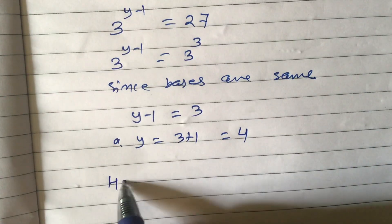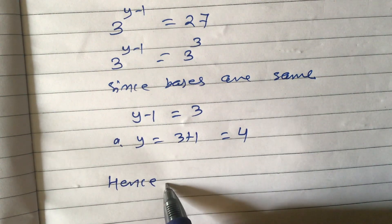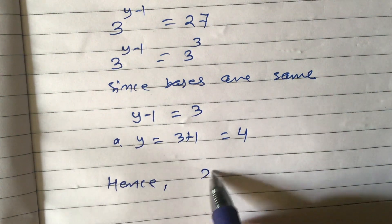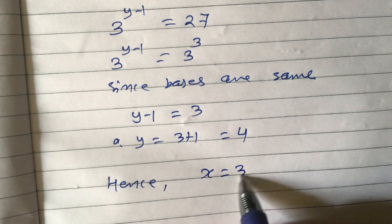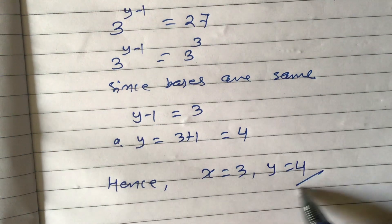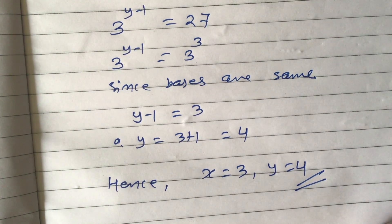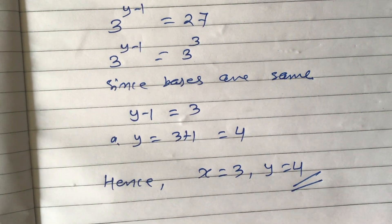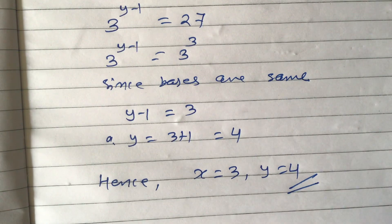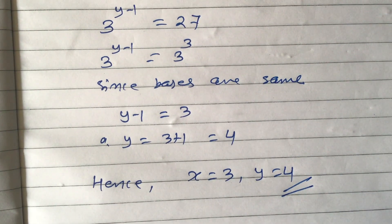Hence, we get x equals 3 and y equals 4. These are the values of x and y. In this way we can solve problems related to ordered pairs. Thank you for watching this video.